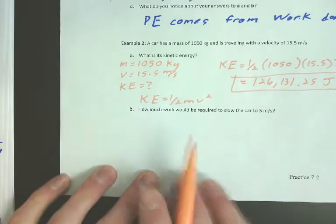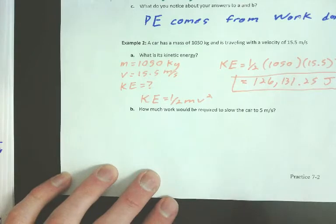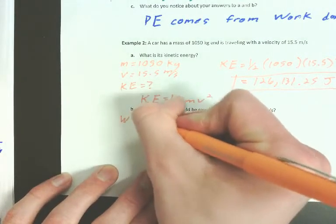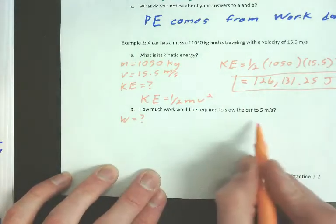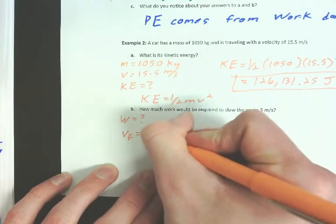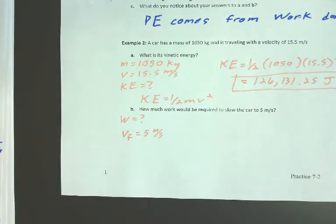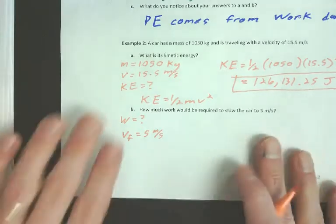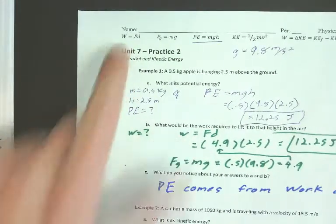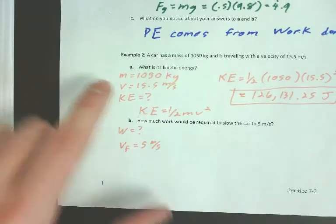Okay. Here's the part that's new. How much work will be required to slow it to 5 meters per second? So, how much work is required if I'm going to slow it? So, this is a final velocity. I want to make it so that it's going 5 meters per second at the end. So, this is a little tricky because the equation we're used to for work is force times distance. But we do not know any force or distance. So, that equation's out.